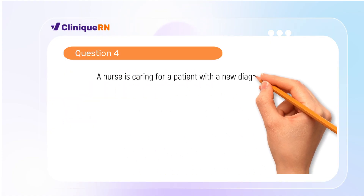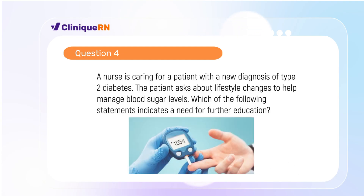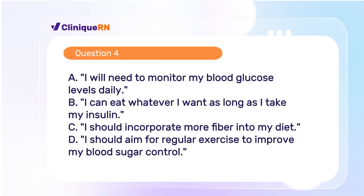Question 4. A nurse is caring for a patient with a new diagnosis of type 2 diabetes. The patient asks about lifestyle changes to help manage blood sugar levels. Which of the following statements indicates a need for further education? A. I will need to monitor my blood glucose levels daily. B. I can eat whatever I want as long as I take my insulin. C. I should incorporate more fiber into my diet. D. I should aim for regular exercise to improve my blood sugar control.